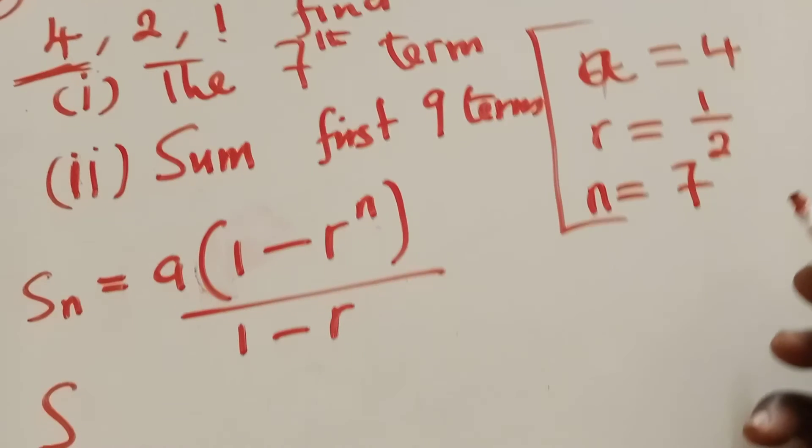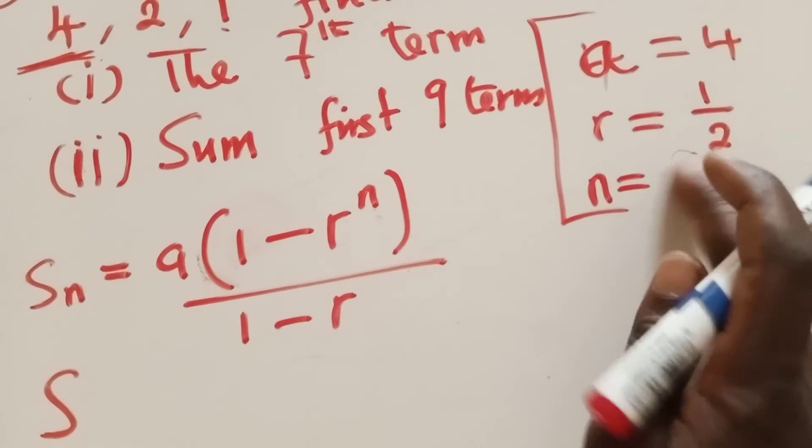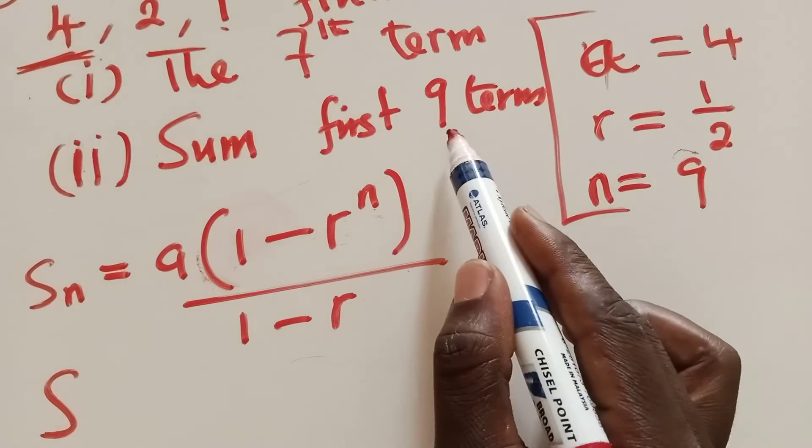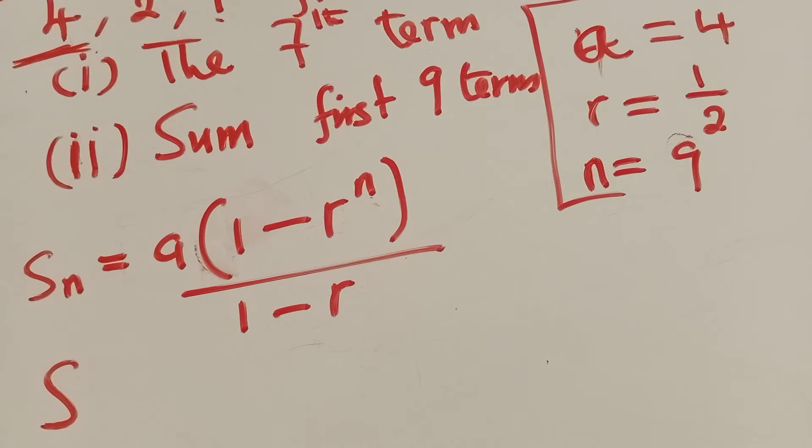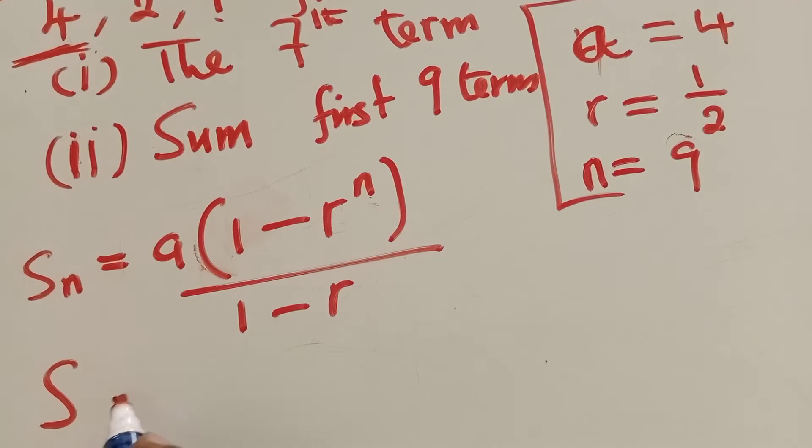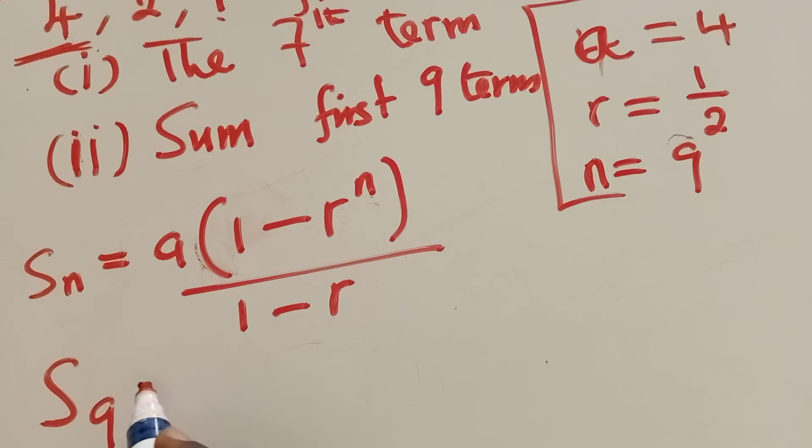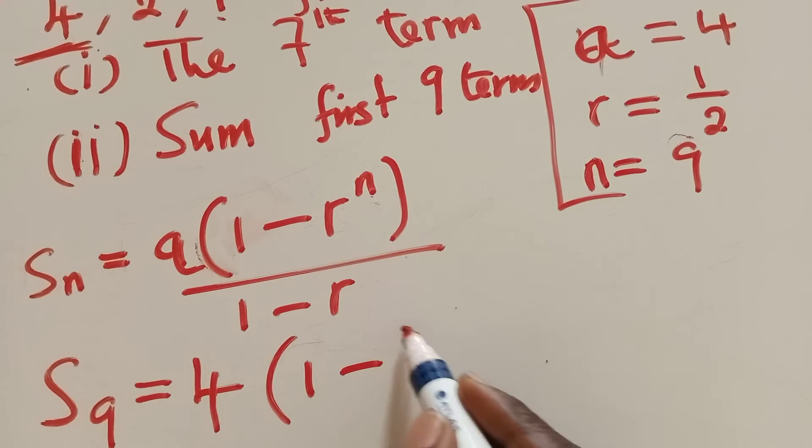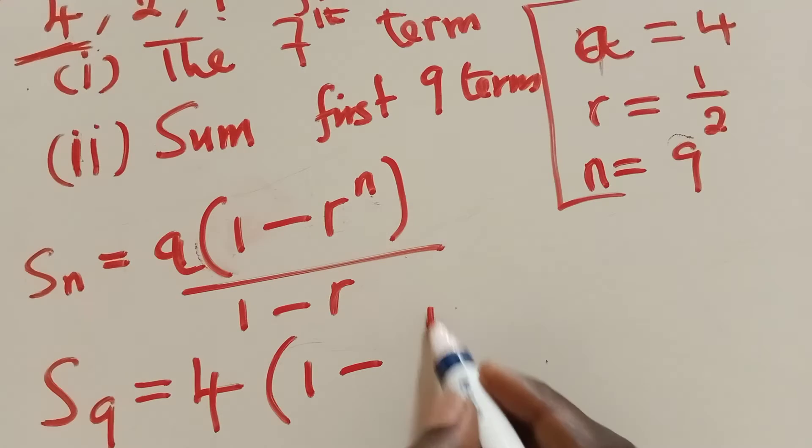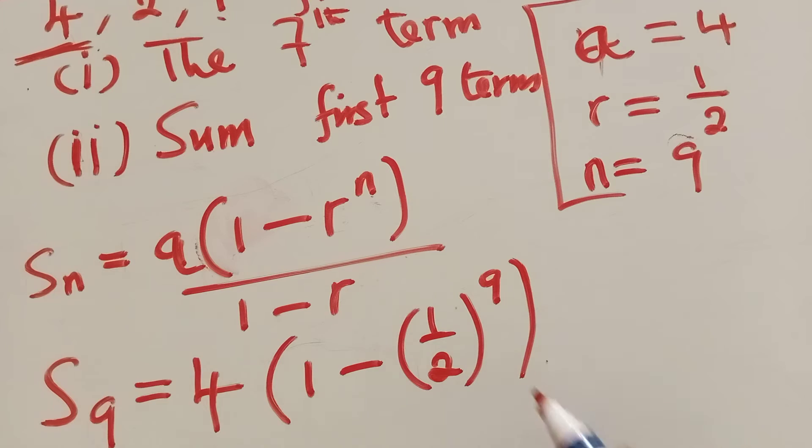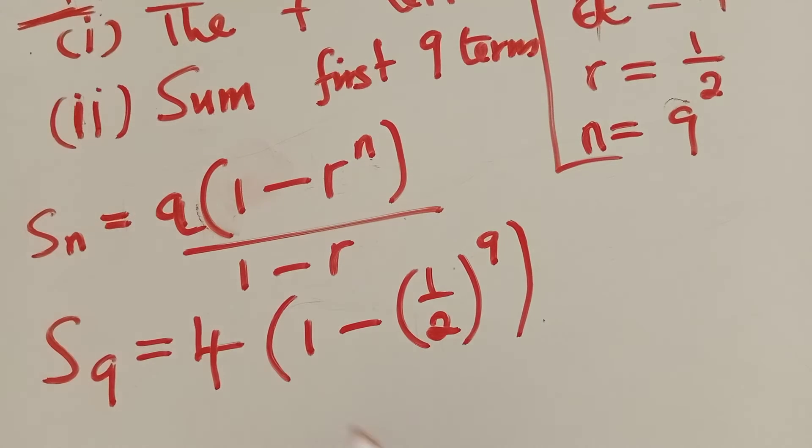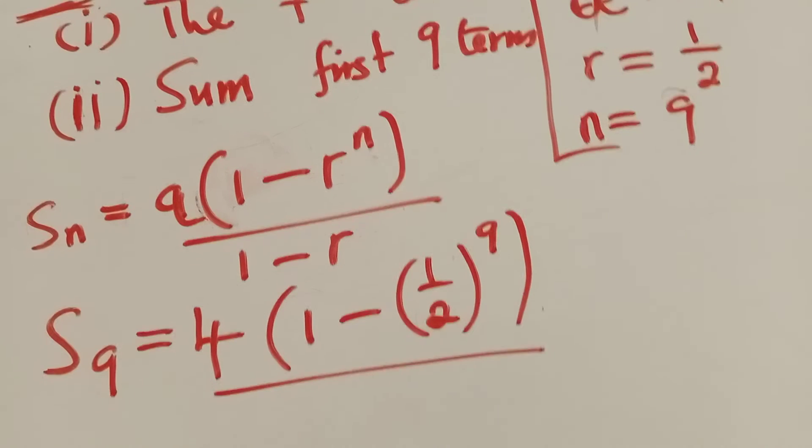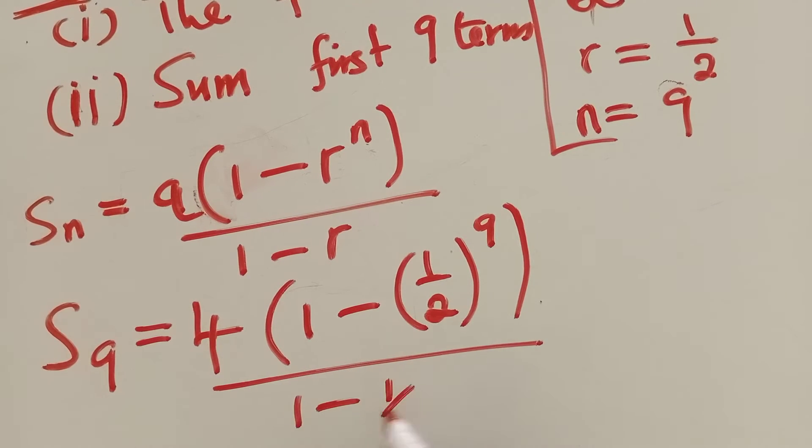In this case, the only thing that will change is N. The N here will be 9, because they're asking us to find the sum of how many terms? Nine terms. So we're going to say 9 here, where is N, we'll put 9. For A, we know that our A is 4. 1 minus, our R common ratio is 1 over 2. Our N is 9, over 1 minus 1 over 2.